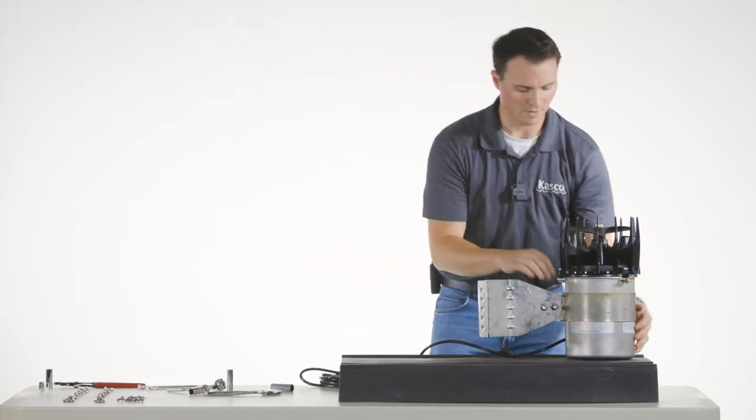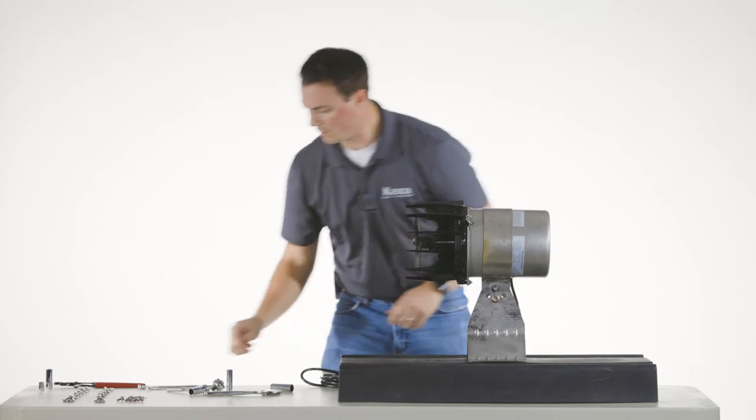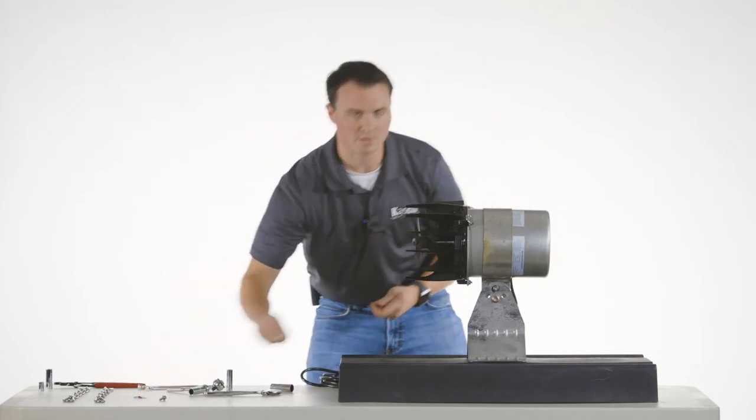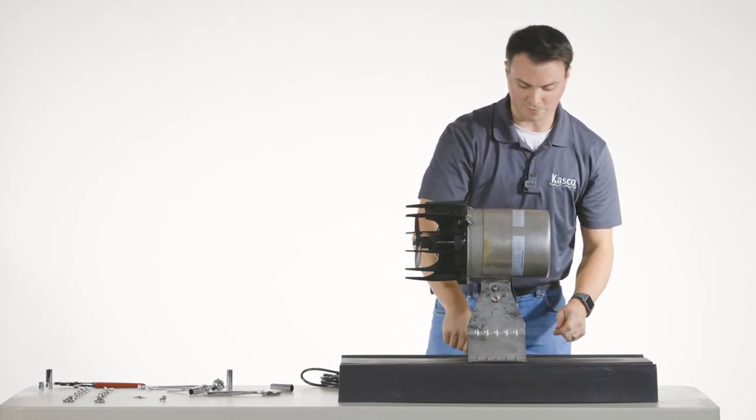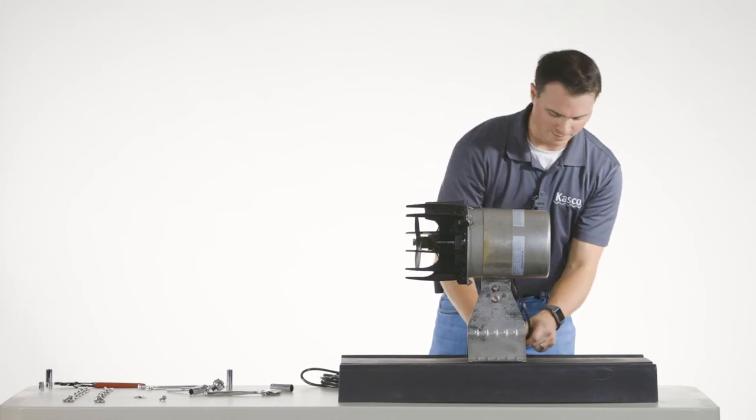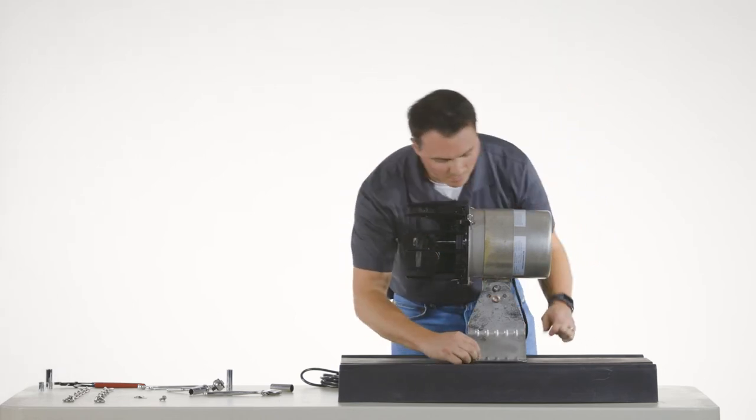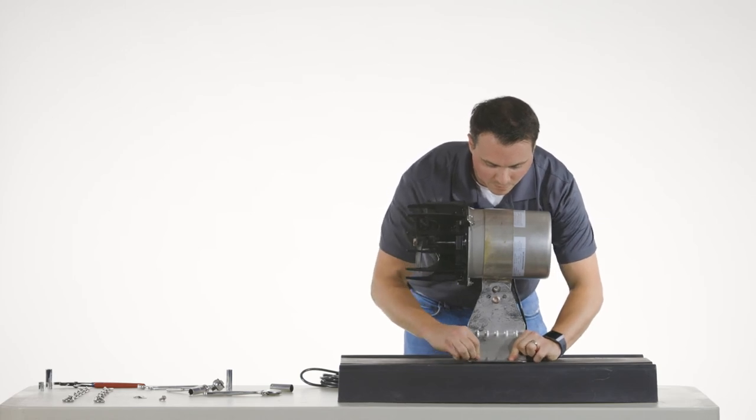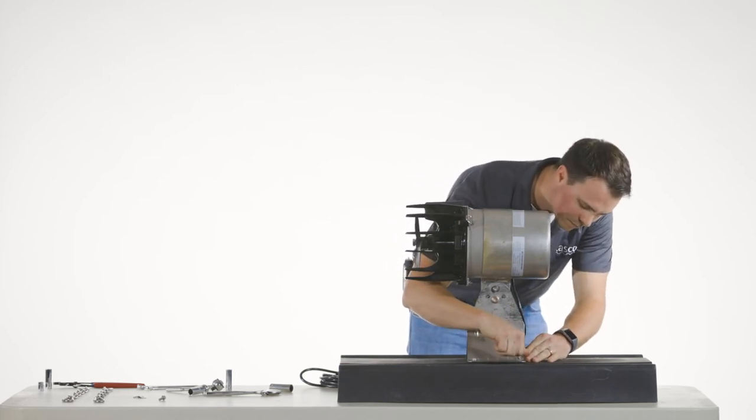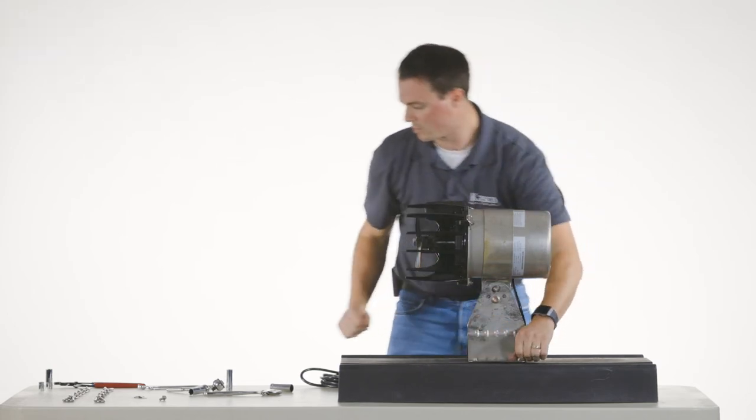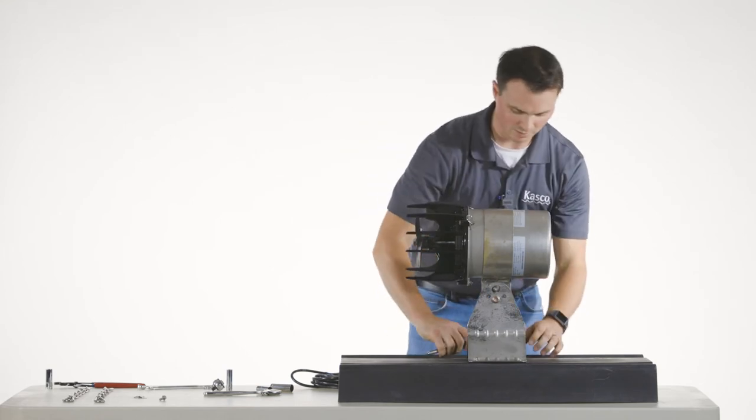So from there, the unit can then be tipped on its side like a table. And we're going to use four of the serrated flange quarter 20 by half inch long bolts and those will actually thread right into the, there's four quarter 20 inserts into the float. And we will use a three-eighths socket to tighten those down.